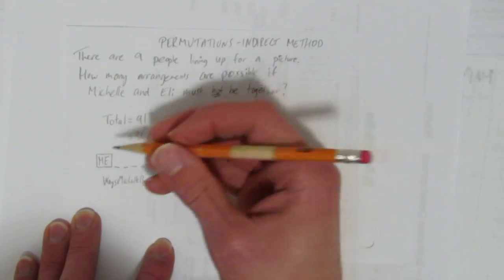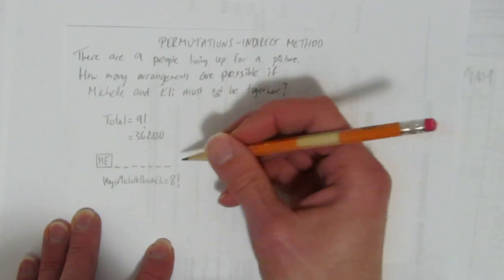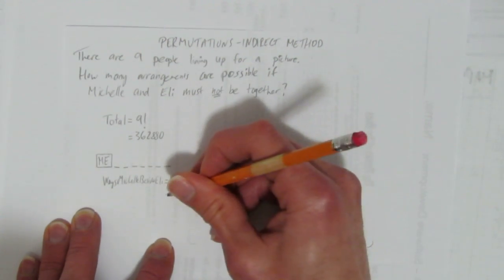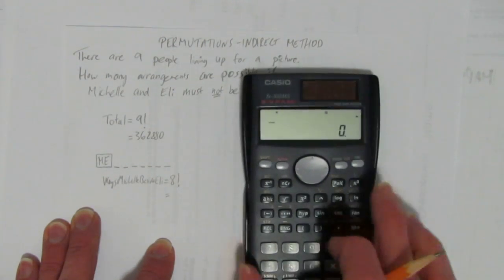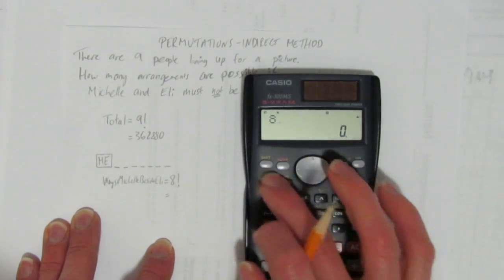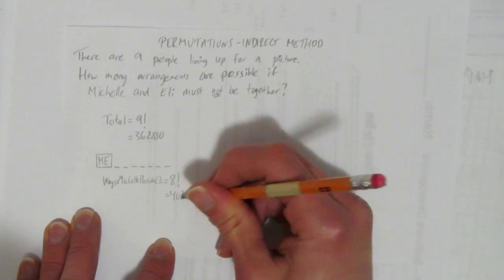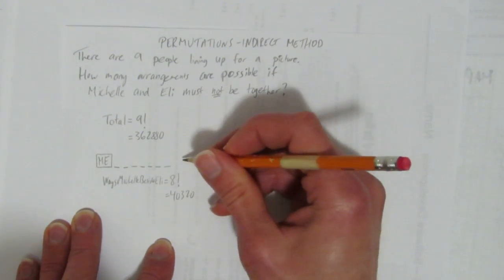I think I called it Elliot. He's Eli. This is Michelle. There's eight factorial ways to arrange them as a pair within all the other people. What's eight factorial? Just use your calculator. And that's 40,320. Let's call that situation one.